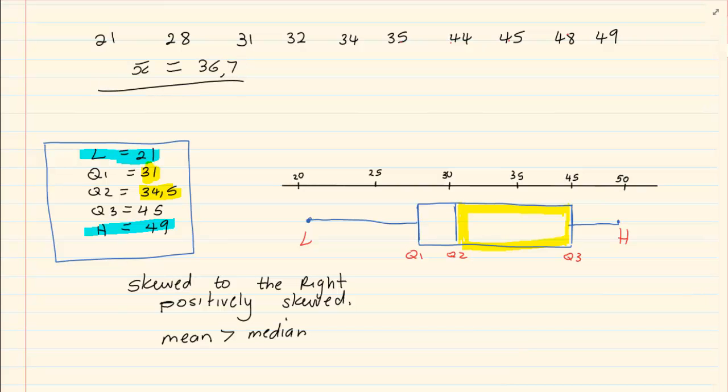If you look at thirty-six comma seven, we've got thirty-five here, it could be around here. Thirty-six comma seven is around there. If you look, the mean is greater than the median because remember the median is your Q2. So, it is obviously greater than the median.